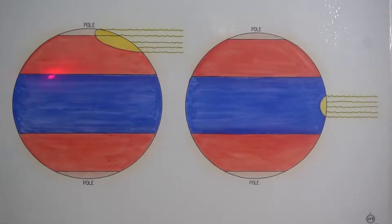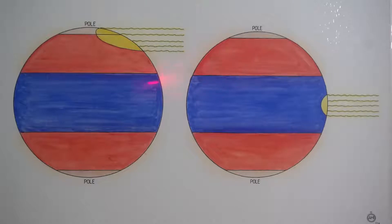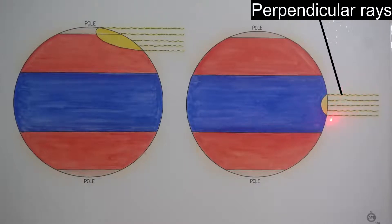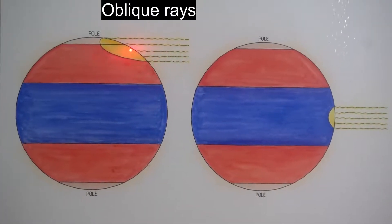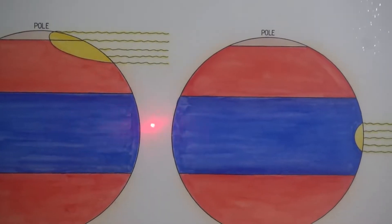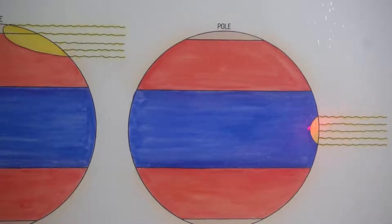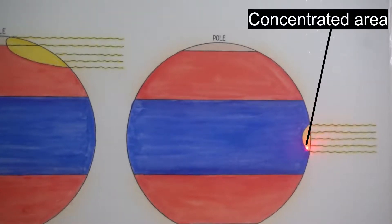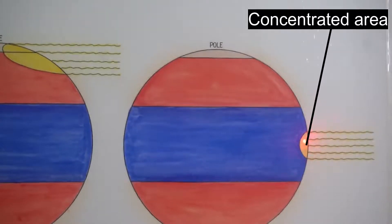Look at this chart. On both of these illustrations, we have the same number of rays falling — one, two, three, four, five. Here they are falling perpendicularly on the earth. Here the rays are falling obliquely on the earth. But now look at the area they cover. The four perpendicular rays cover a smaller area, and therefore the heat here is really, really concentrated.